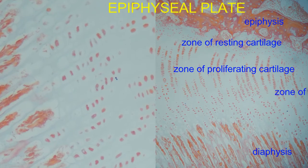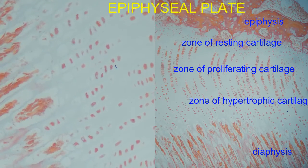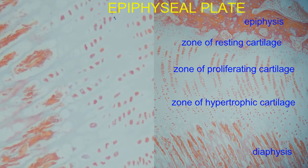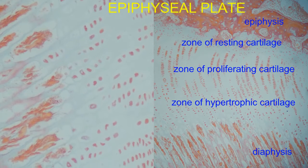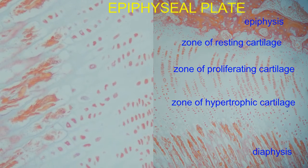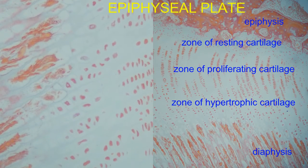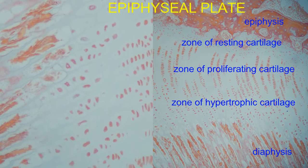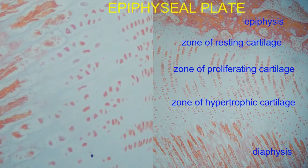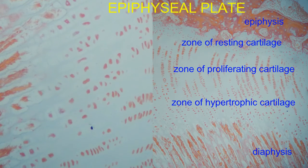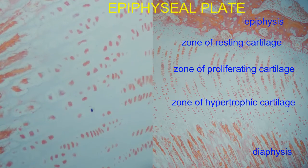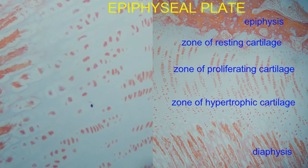In the third zone, the zone of hypertrophic cartilage, the chondrocytes mature further, producing glycogen. The lacunae, or spaces which they occupy, enlarge. The matrix between lacunae shrinks, and the cartilage approaches the diaphysis.